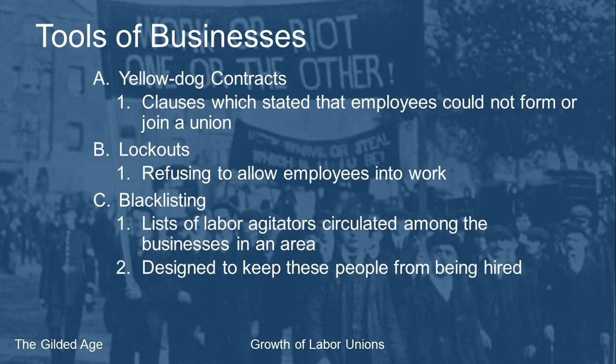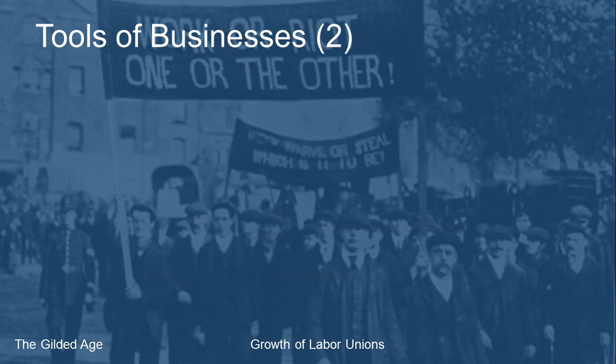Researching the history of the labor movement during the Gilded Age can sometimes be difficult because if your name got on a blacklist, how were you going to get another job? The simple way was to change your name — in the late 1800s, you could take on an assumed name and nobody would know.